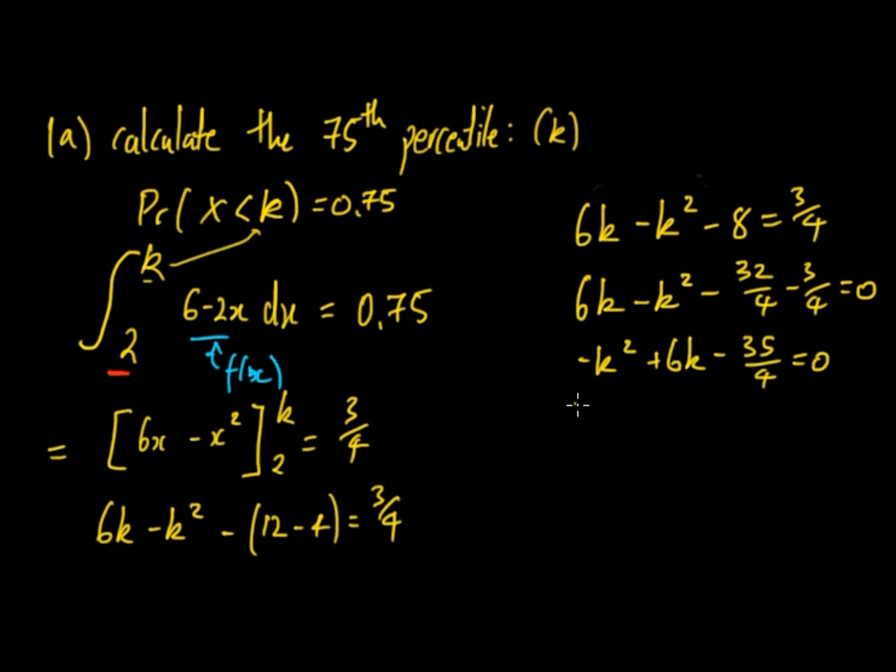So using the quadratic formula, we get k is equal to negative b, so negative 6, plus or minus the square root of b squared, so that's 36, minus, minus, minus, so that's going to be still minus, because 3 minuses.